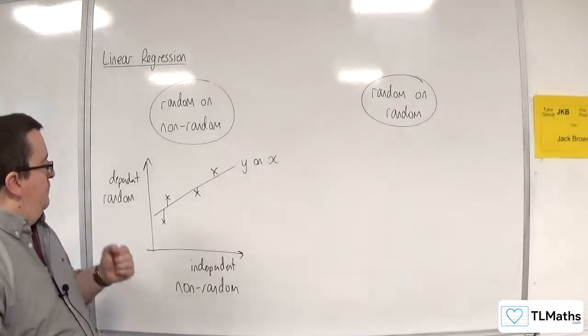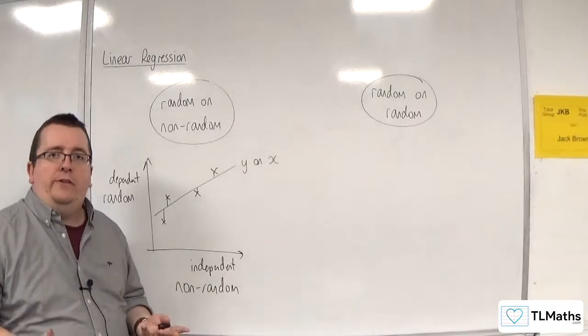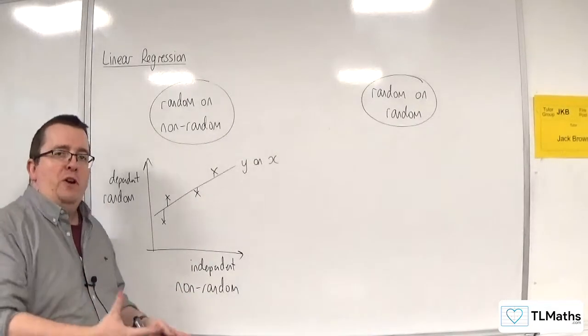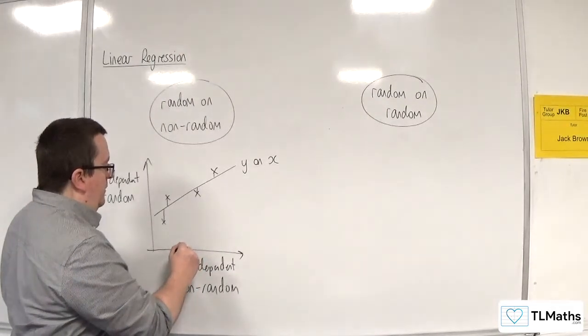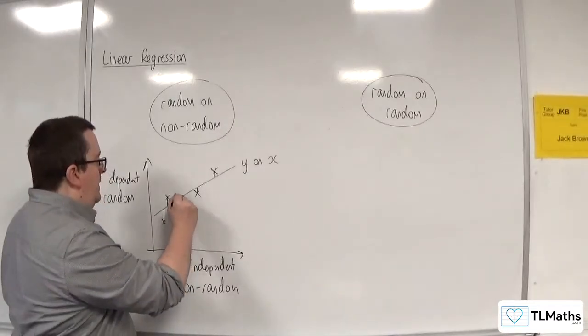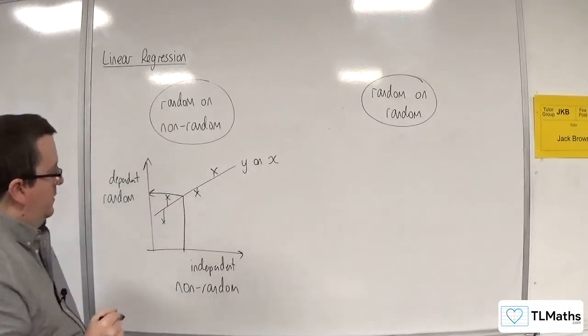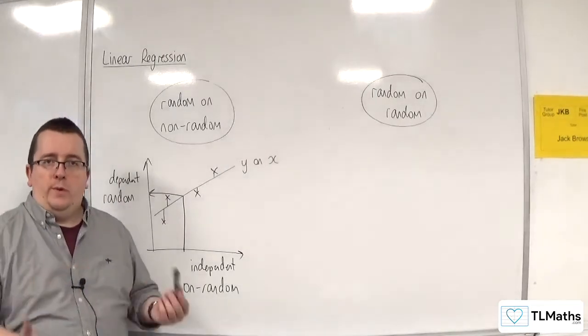So given an x value, given a certain amount of fertilizer, what would be the yield of my crop? You would go from your x-axis, your non-random variable, go up here, and then you'd be able to predict your yield of the crop.